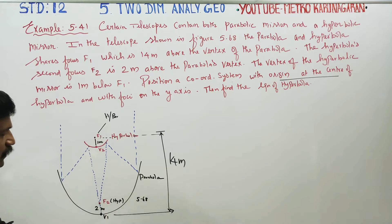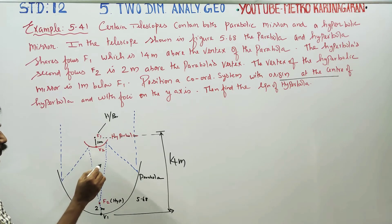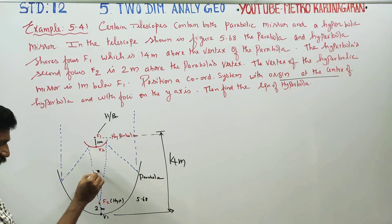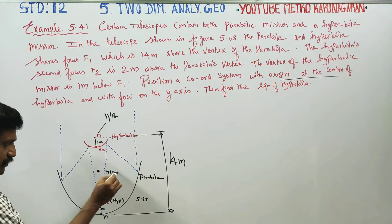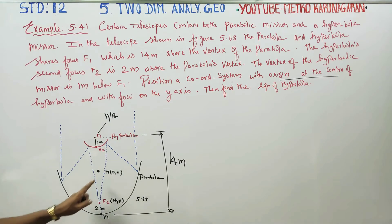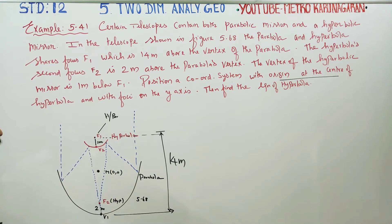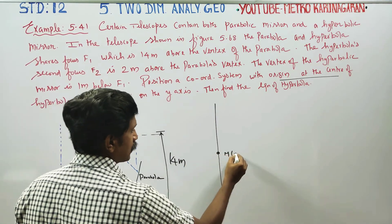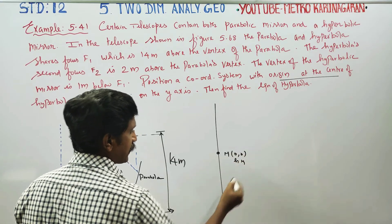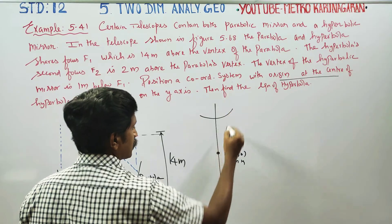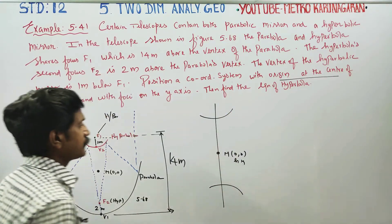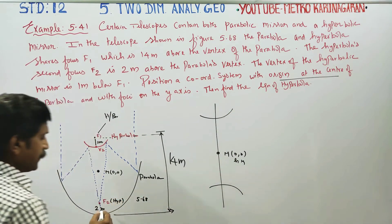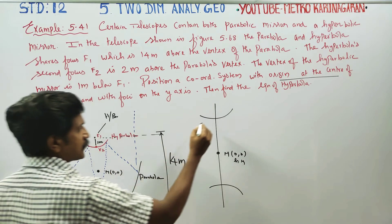Now, this is the equation of the hyperbola. How do we find it? The center of the hyperbola is at the origin M. We need to identify the hyperbola vertices V2 and V1.